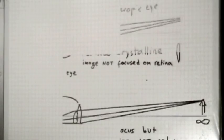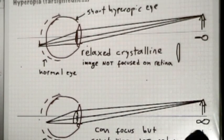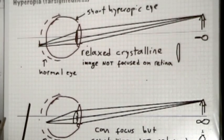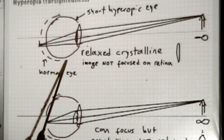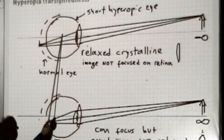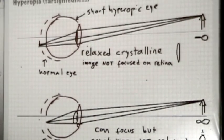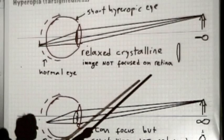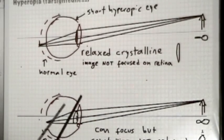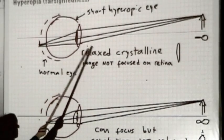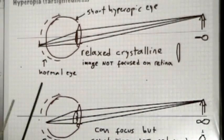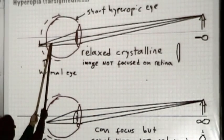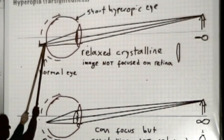Now let's talk about hyperopia, the opposite of myopia. The problem is that the eyeball is a little shorter than it should be. The normal eyeball has the retina at a certain distance behind the crystalline lens, but for a hyperopic eye, the retina is closer. So if you have an object at infinity, the light rays with a relaxed crystalline lens would be focused behind the retina of the hyperopic eye, so it looks blurry.